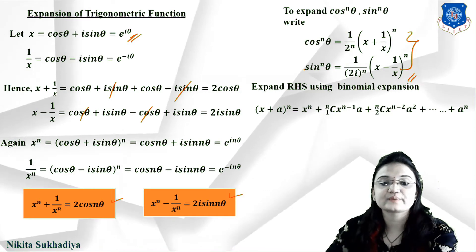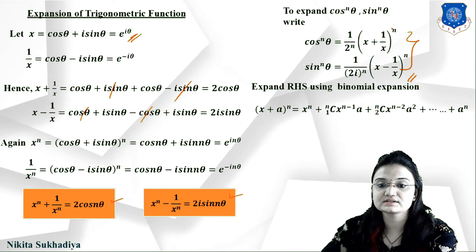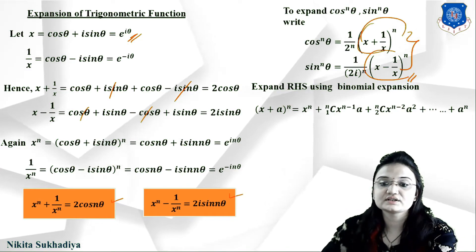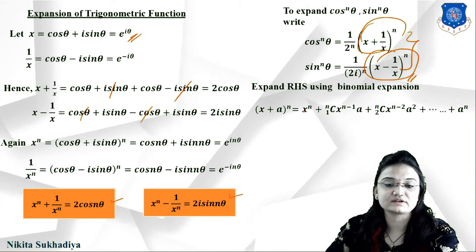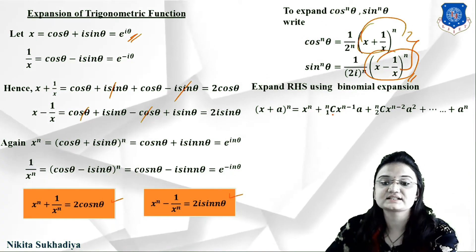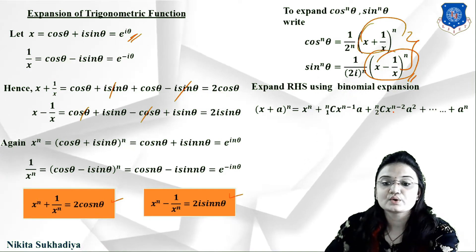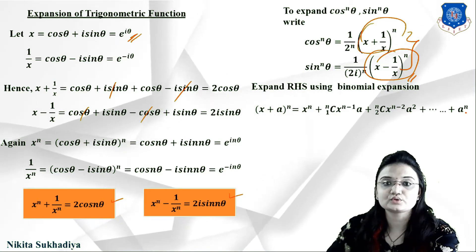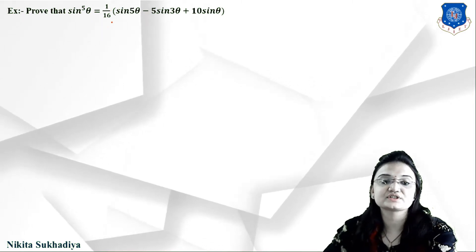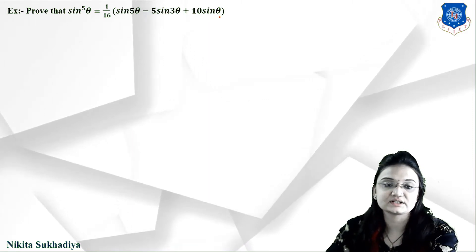Next, expand the right-hand side using binomial expansion: (x + a)^n = x^n + nC1·x^(n−1)·a + nC2·x^(n−2)·a² + ... + a^n. Now let us prove that sin⁵θ = (1/16)(sin5θ − 5sin3θ + 10sinθ).